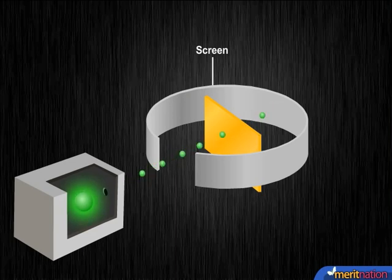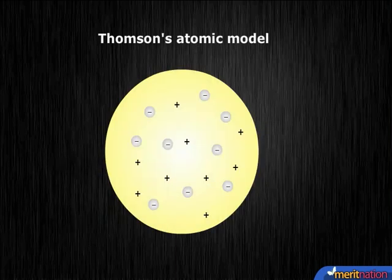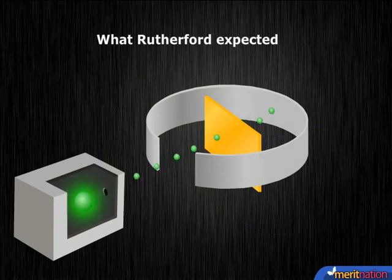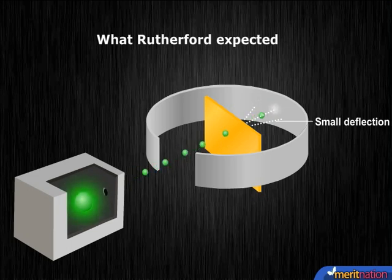Now, according to Thomson's atomic model, an atom consists of a positively charged sphere with electrons embedded in it. So, Rutherford expected that almost all the alpha particles would pass straight and only small deflections would be observed if there would be any.